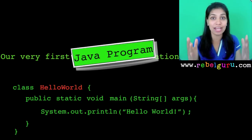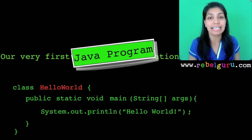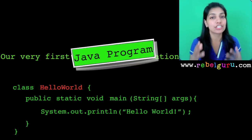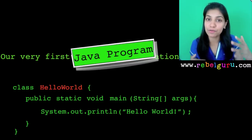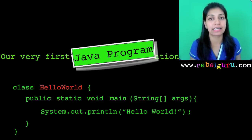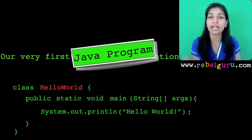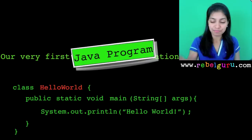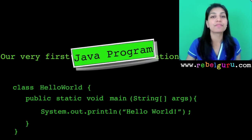Many students after a semester full of programming forget this rule, and when it comes to the final practicals they panic because their program refuses to compile. The simple mistake they've made is not saving it correctly. So every time your program refuses to compile, check if you saved it correctly — it has to be the same name as the class in which you've written your main method.